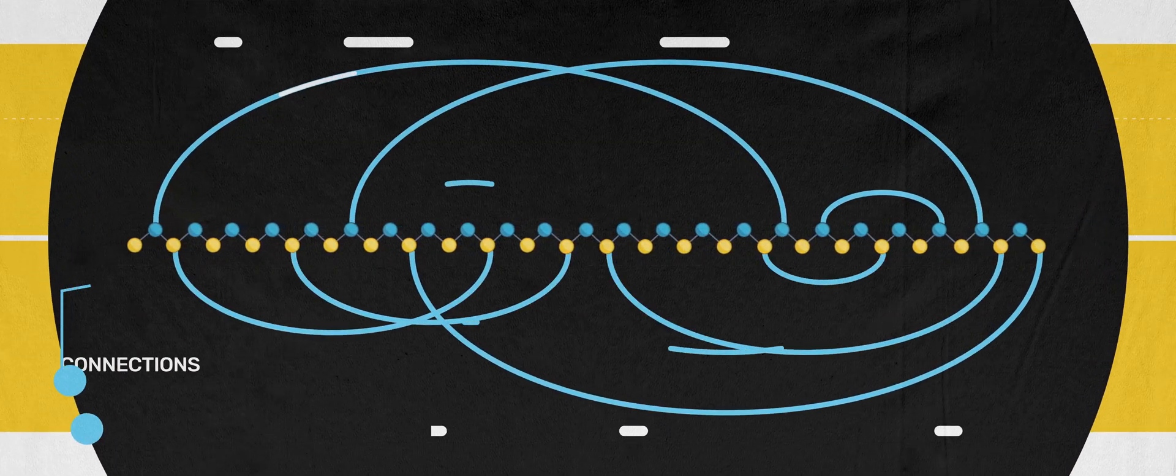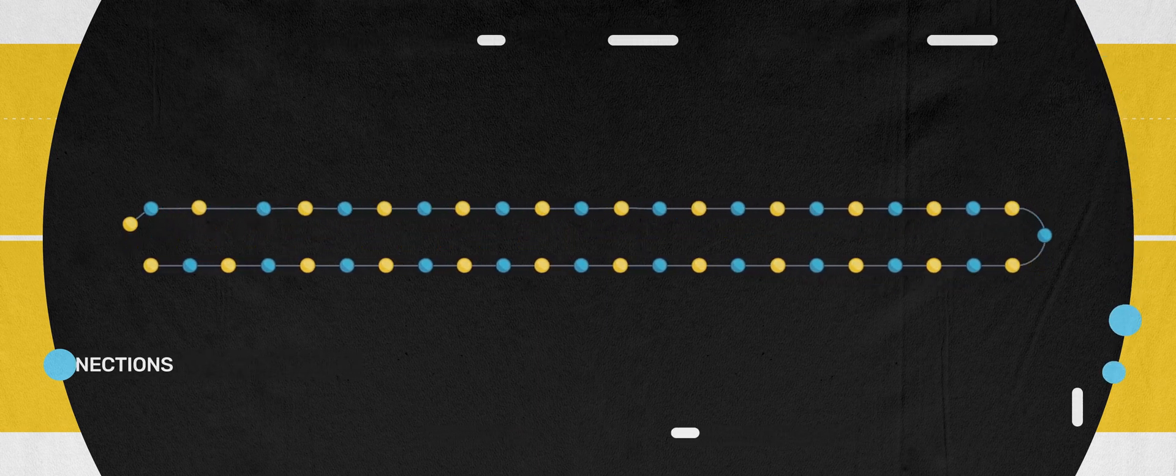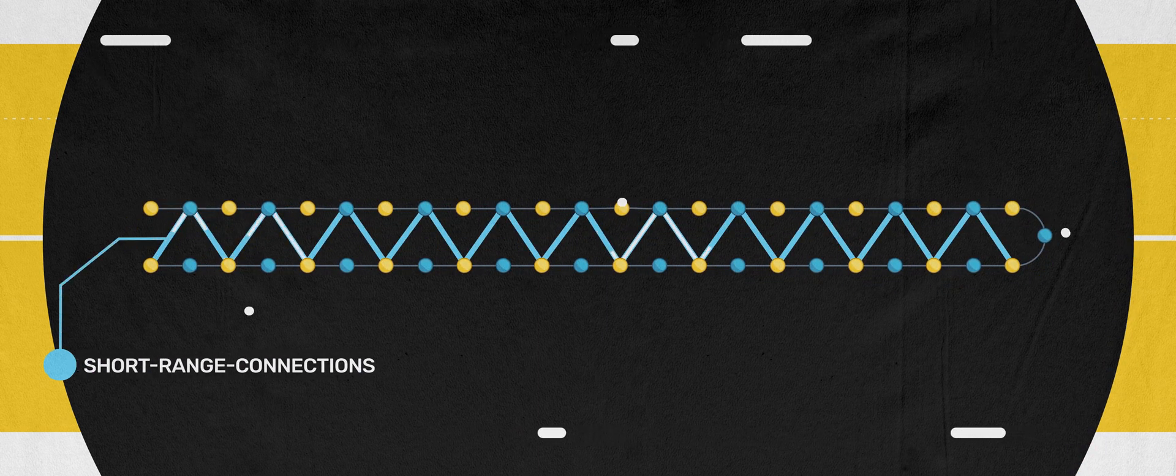Cat qubits are arranged in a line. But even then, adding these long-range connections is still a mess, unless you fold that line. Then, distant qubits become neighbors, which are now easy to connect.